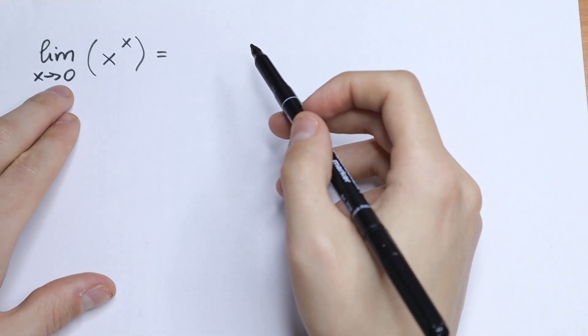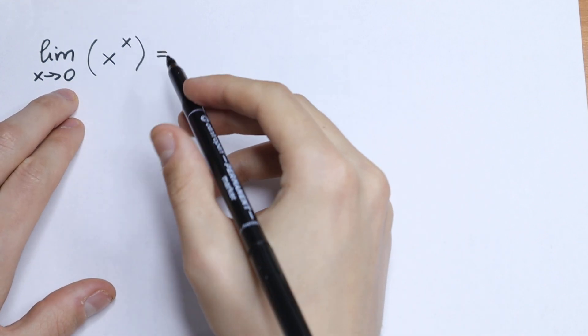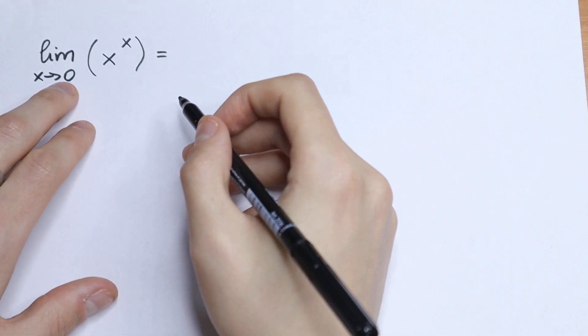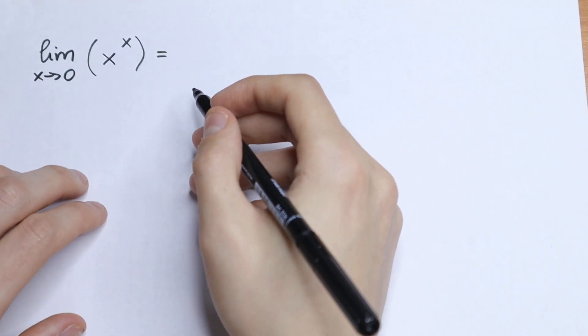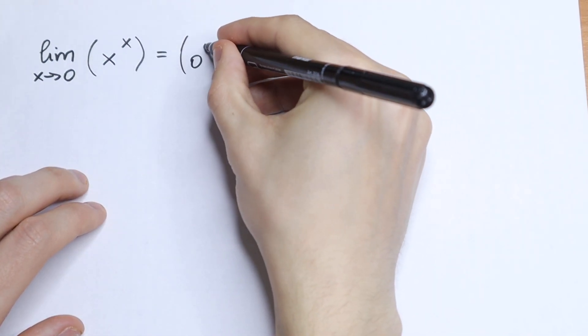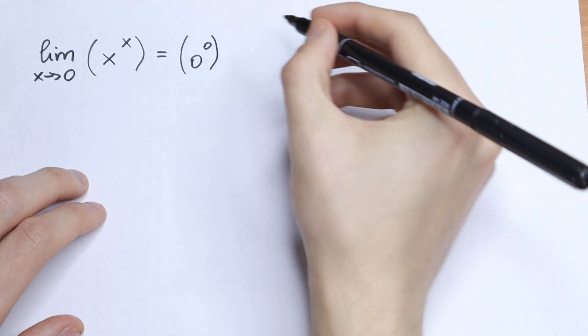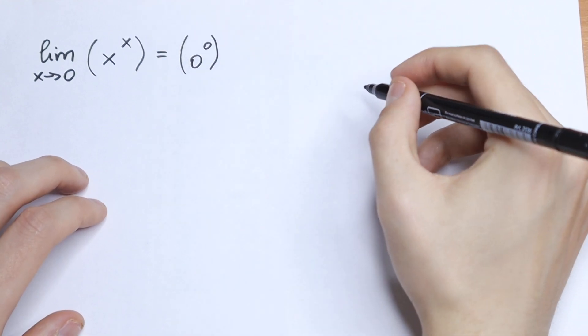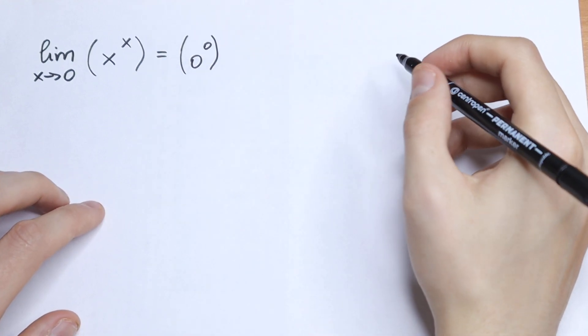So let's try to plug in 0. What we will have? We will have 0 to the power 0. So 0 to the power 0 is undefined, so we don't know what value that represents.